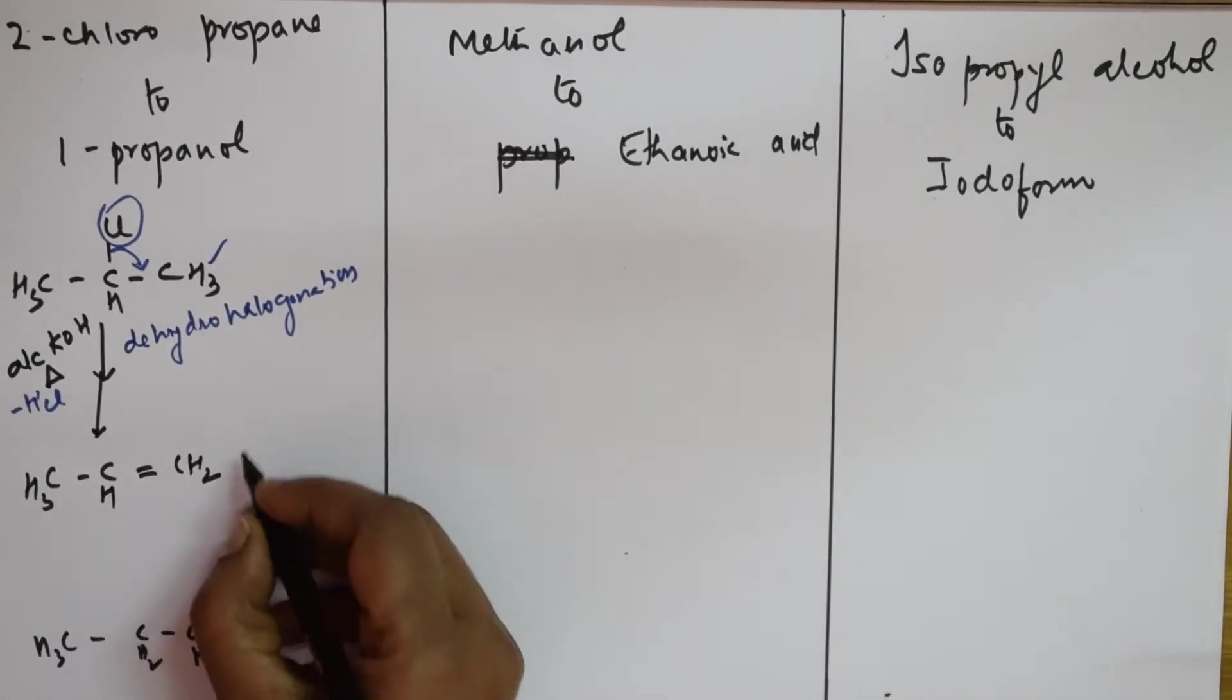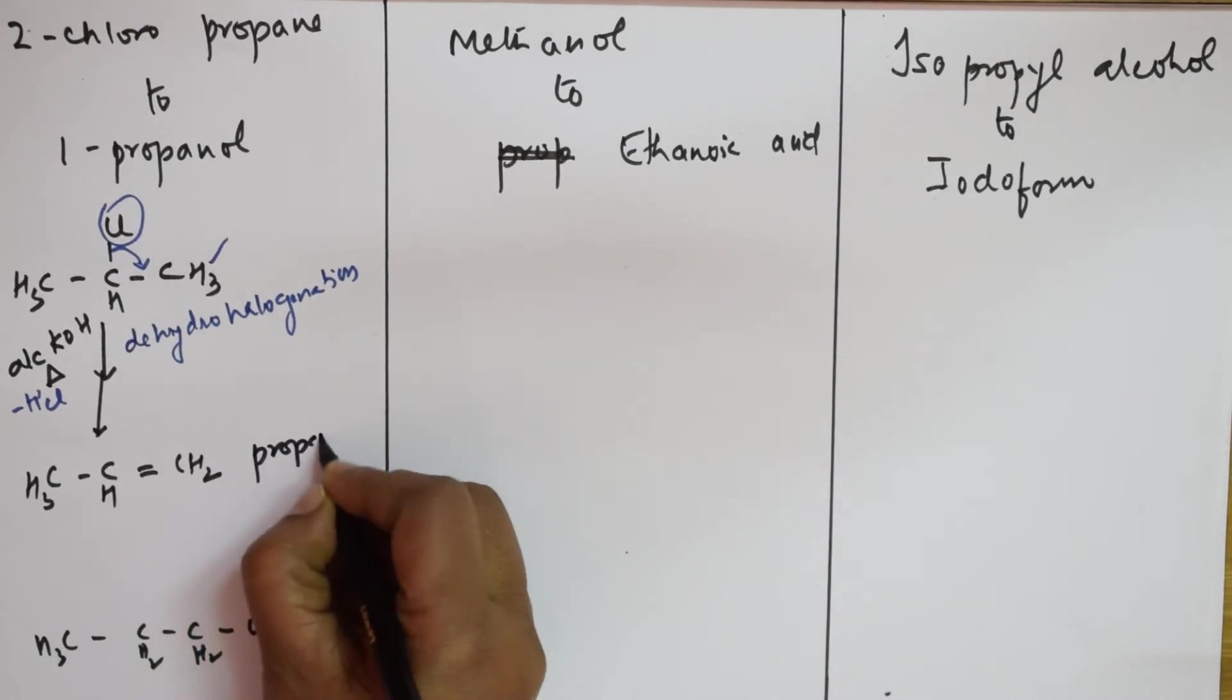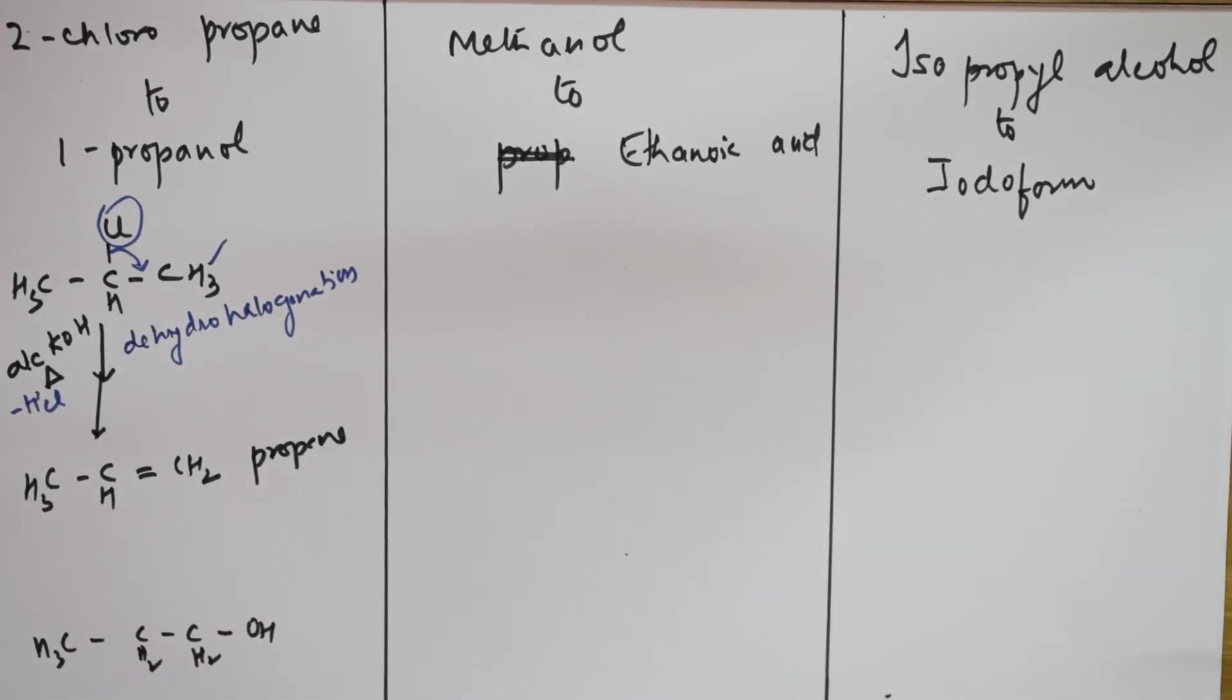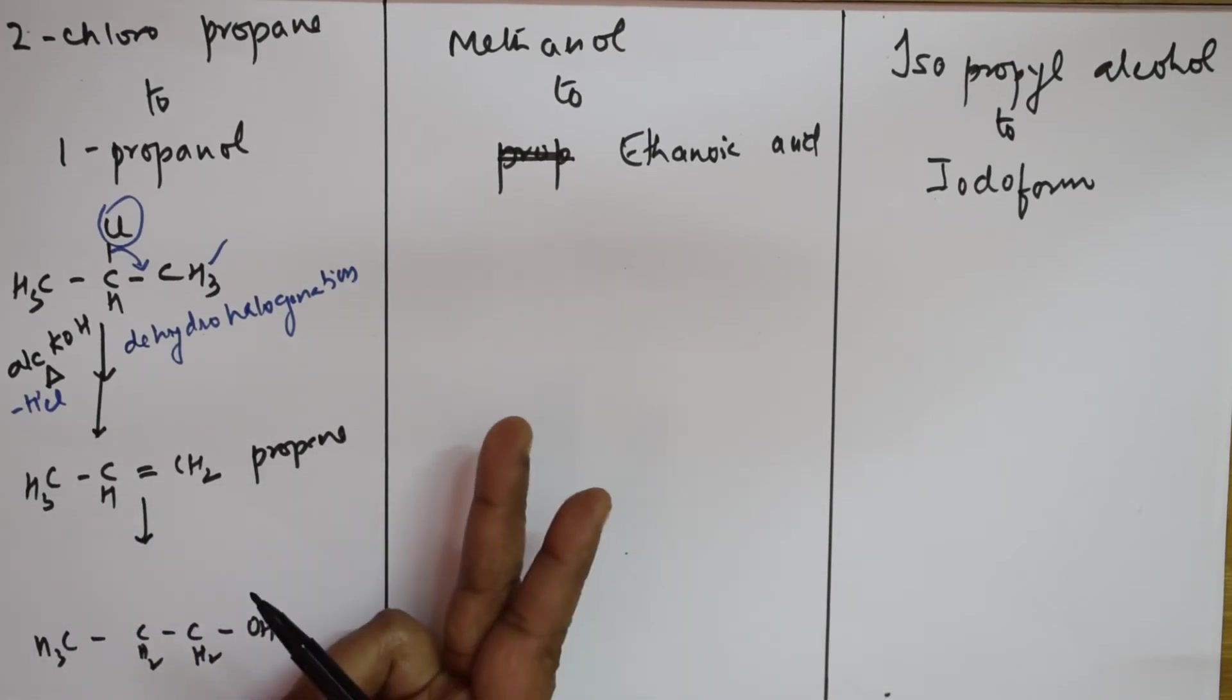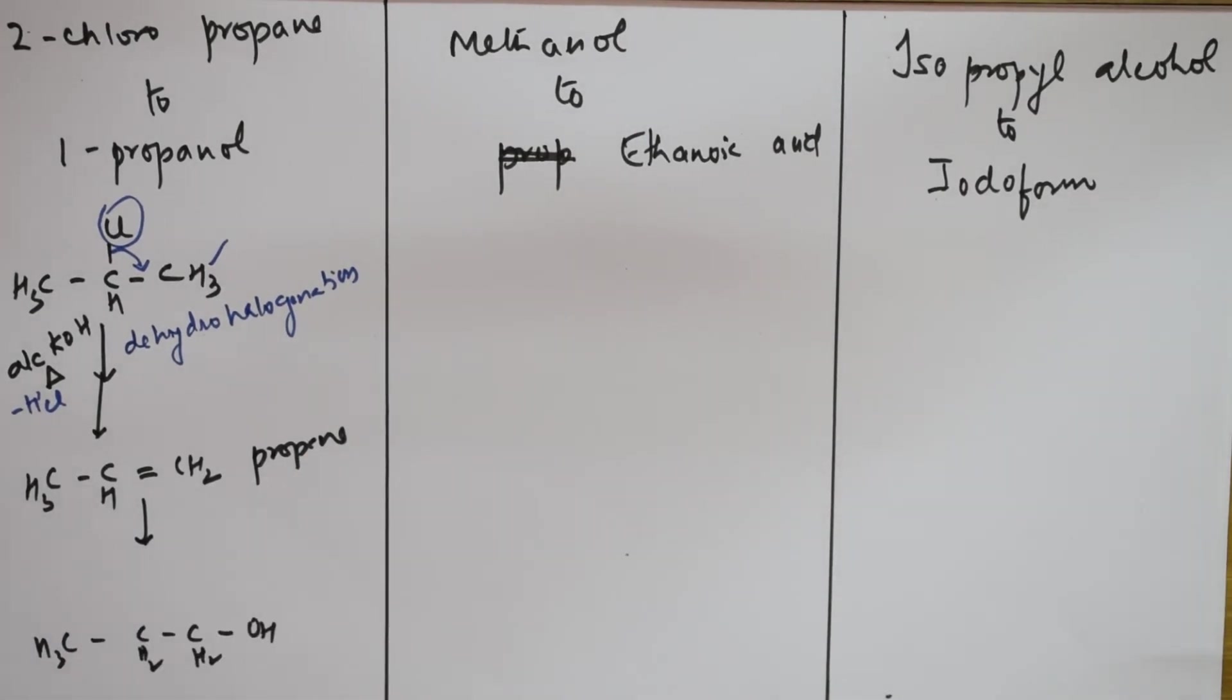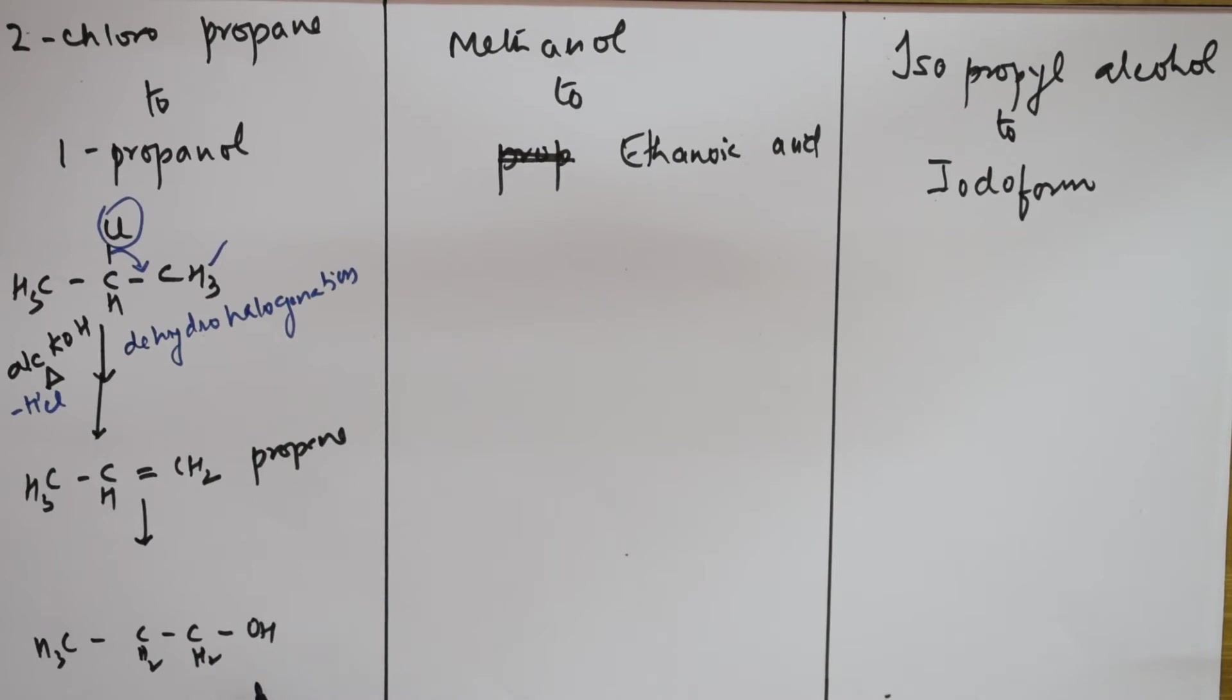Alkene is ready. Now to this propene what am I going to do? As soon as you get alkene, either you need to apply Markovnikov addition or anti-Markovnikov addition. We very well know in anti-Markovnikov addition, in the presence of peroxide, the negative addendum adds to the terminal carbon.